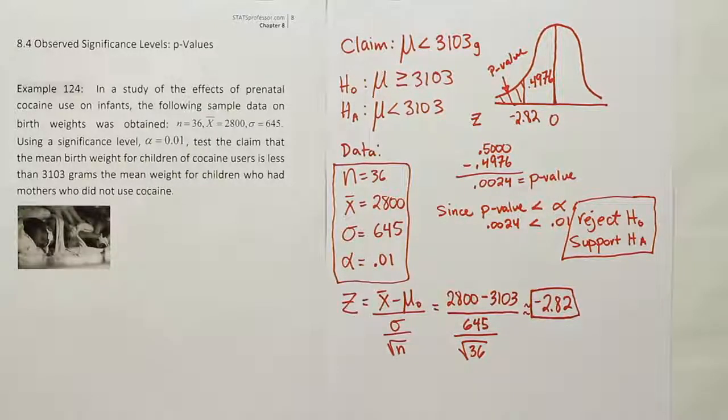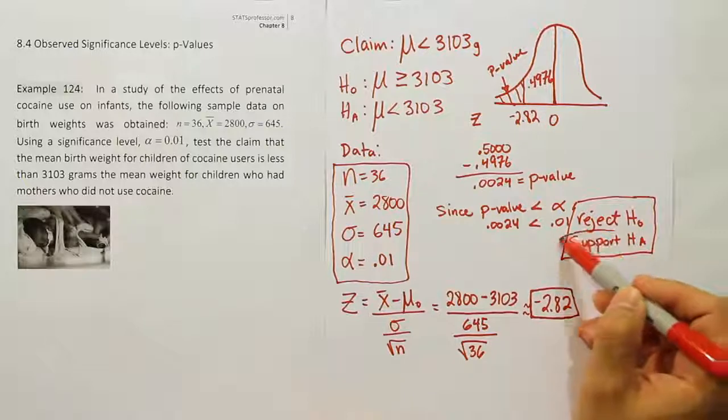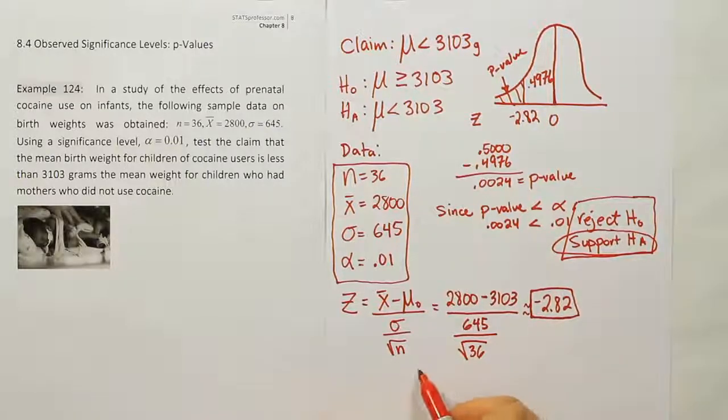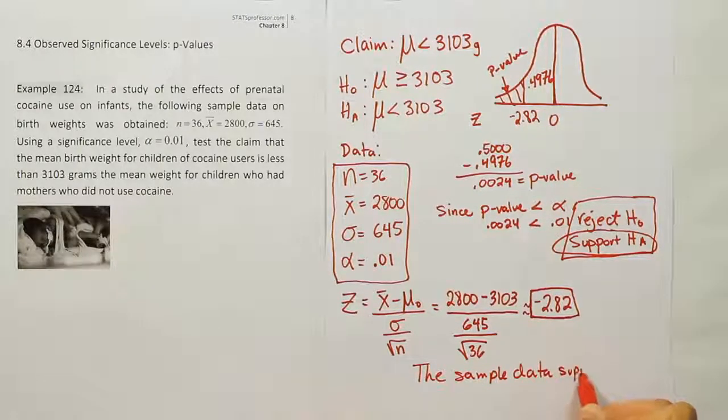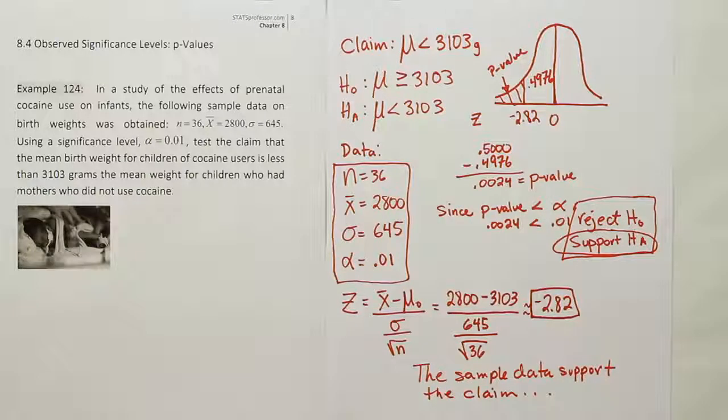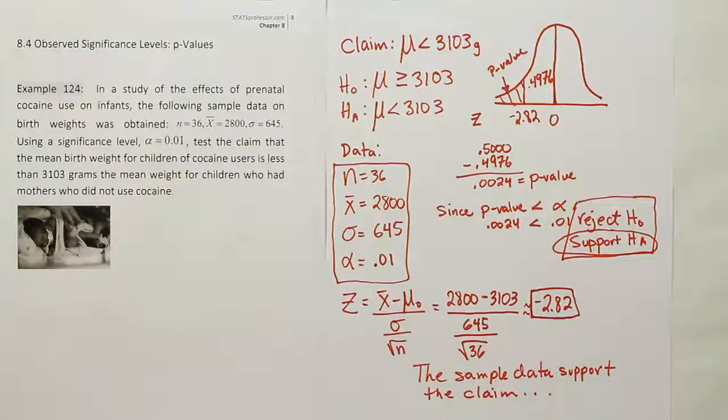The next part of the procedure is to then state our final conclusion based on the claim. The claim, if you look at it here, is the same as the alternative. So we should use the phrasing that goes with that. So we should say we support the claim. The sample data support the claim. And of course, what's the claim? The claim is that if you expose your child to cocaine while it's in the womb, it's likely to be underweight. The mean weight for cocaine babies is less than the weight for healthy babies. So essentially, the message here is that it's another reason that cocaine is a bad idea.